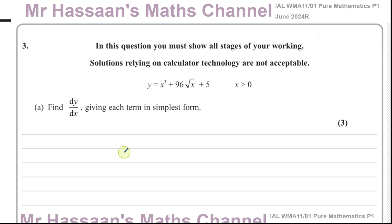And here we're asked to find dy/dx for this equation y equals x cubed plus 96 times root x plus 5, where we know that x is greater than 0. Find dy/dx giving each term in its simplest form.